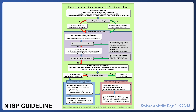In any tracheostomy emergency — for example, where the patient is suddenly desaturating or struggling to breathe — the first thing you should do is call for help and then look, listen, and feel at the mouth and tracheostomy. You are checking whether the patient is breathing. If they are not, this should be treated as a respiratory arrest and a call should be put out to the resuscitation team.